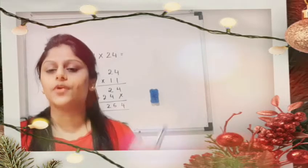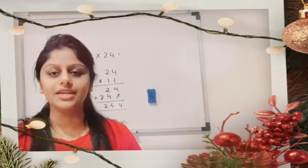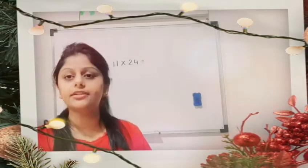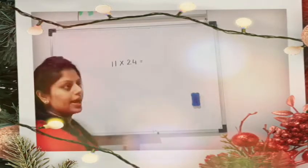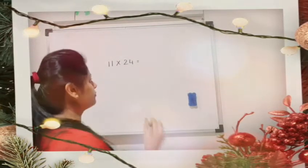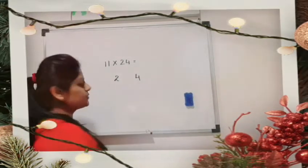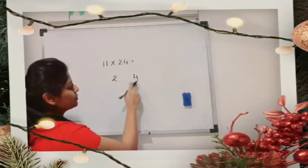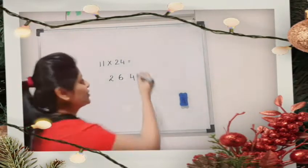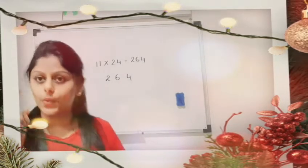We'll also cover triple and quadruple digits, so please watch until the end. For the simplified method: whenever you have a two-digit number to multiply with 11, write the first digit, leave a gap, and write the last digit. For 11 × 24, write 2 and 4. Then add them: 4 + 2 = 6, and place it in the middle. So the answer is 264.